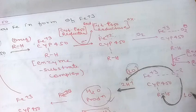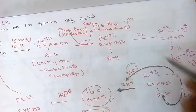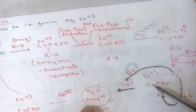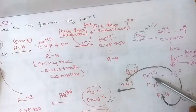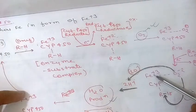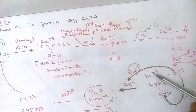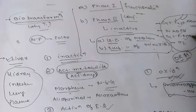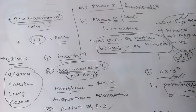In summary, cytochrome P450 protein, NADPH cytochrome P450 reductase, and molecular oxygen are all involved in oxidative reactions. After the reaction, cytochrome P450 returns to its Fe³⁺ state and the cycle continues.